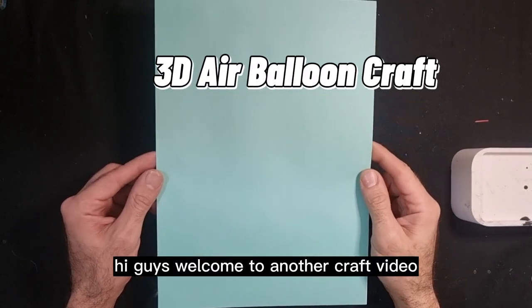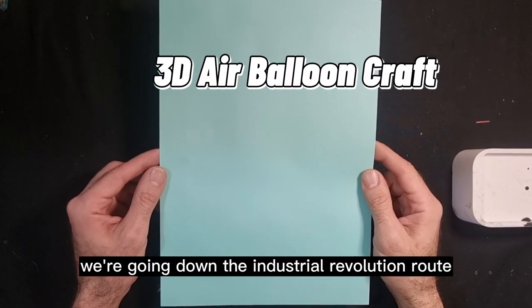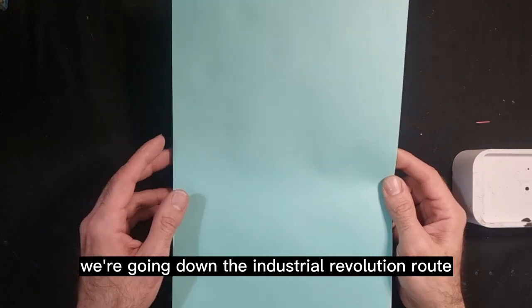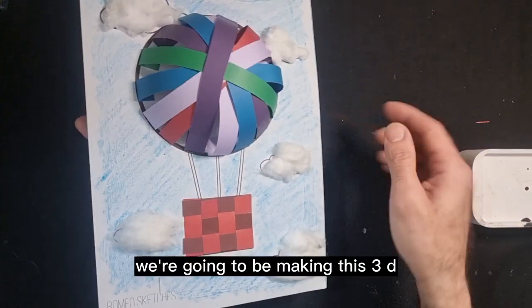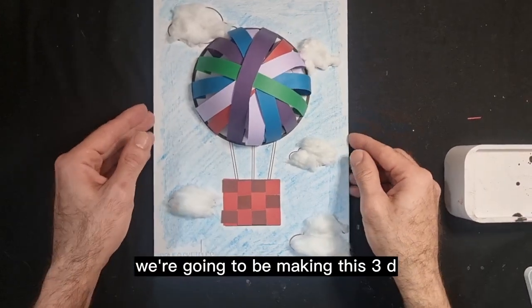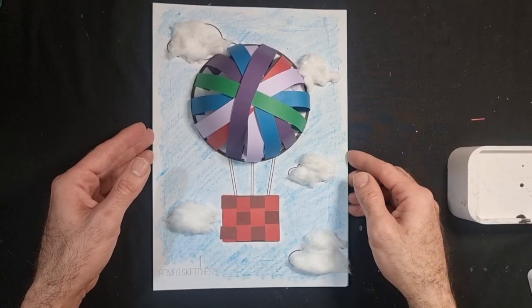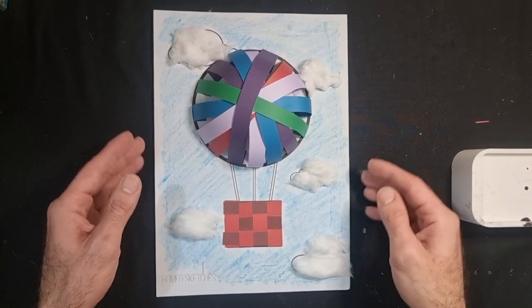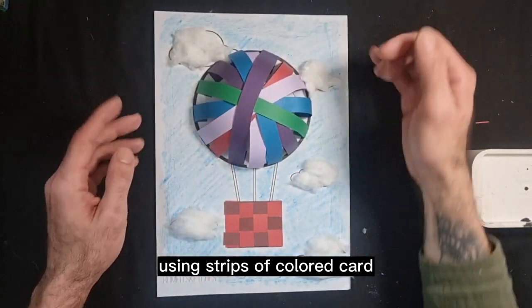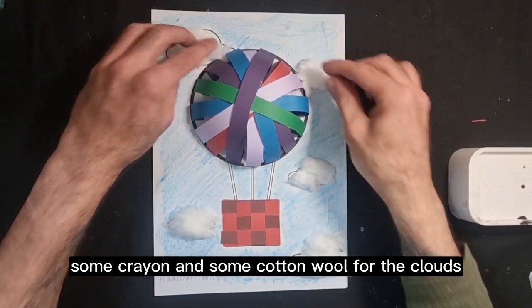Hi guys, welcome to another craft video. In today's video we're going down the industrial revolution route and we're going to be making this 3D pop image of an air balloon using strips of colored card, some crayon, and some cotton wool.